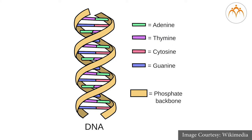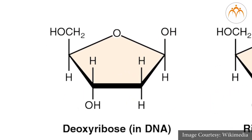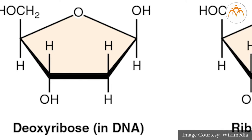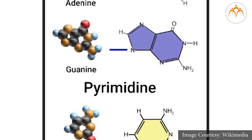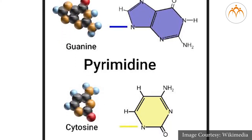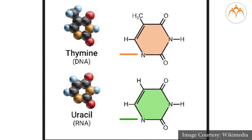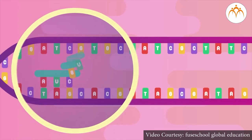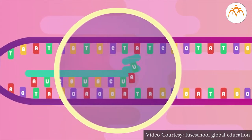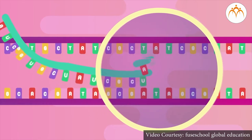Guanine and cytosine only bond with each other and not with adenine or thymine. There are a couple of key differences between the structure of DNA and RNA molecules. They contain different sugars: DNA has a deoxyribose sugar while RNA has a ribose sugar. While three of their four nitrogenous bases are the same, RNA molecules have a base called uracil instead of a thymine base. During transcription, uracil replaces the position of thymine and forms complementary pairs with adenine.